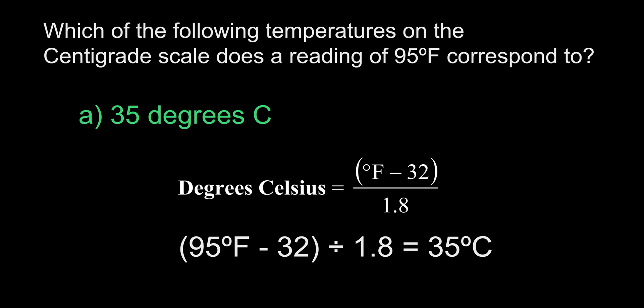The answer is A, 35 degrees Celsius. You probably thought we were done with the math questions, but this one's pretty easy, and the equation is given to us on the exam. We are going to be converting Fahrenheit to Celsius. We take our Fahrenheit value of 95, subtract 32 from it. This gives us a value of 63, and then divide it by 1.8. This gives us our answer of 35 degrees Celsius.